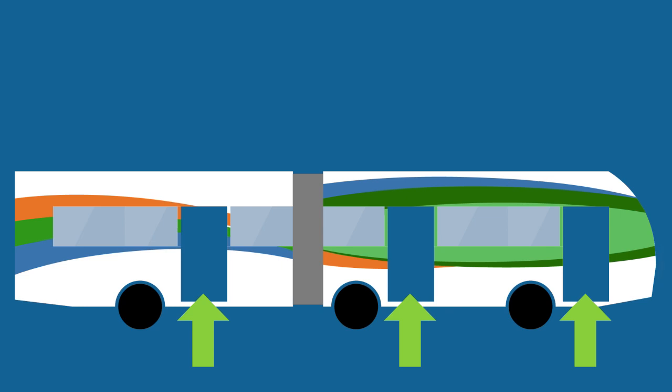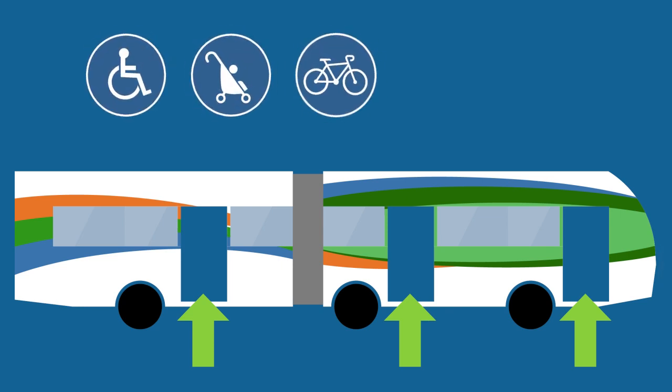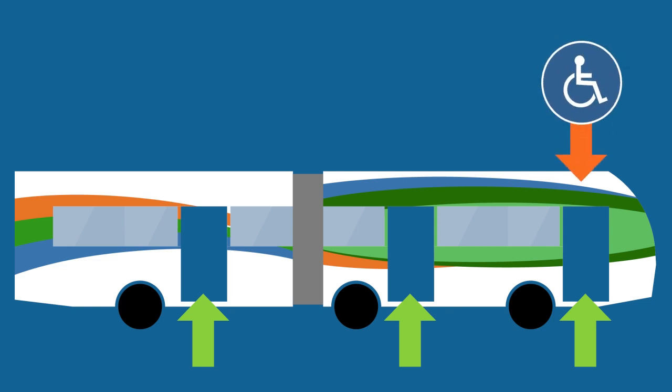Flash provides full accessibility for wheelchairs, strollers, bikes, walkers, and carts. Persons in wheelchairs and scooters should enter through the front door. Walk your bike through the back door and secure it inside.